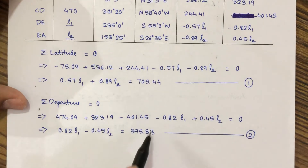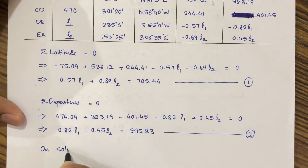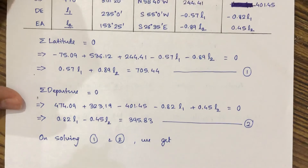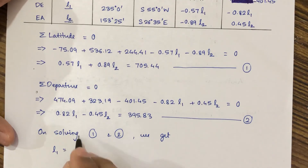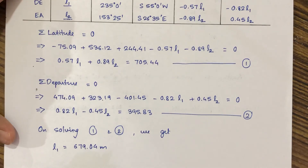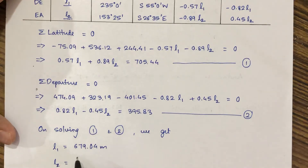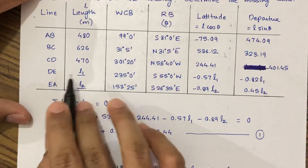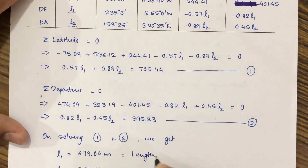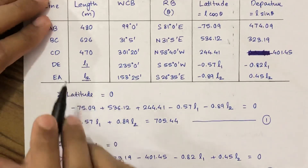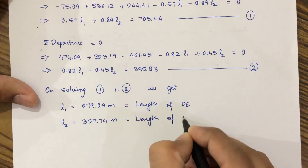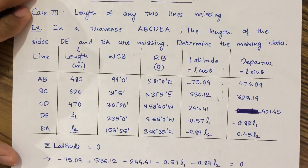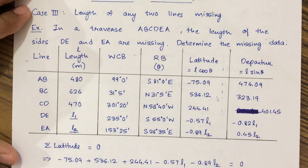We now have two simultaneous equations. On solving equations 1 and 2, which we can do directly on the calculator, we get L1 = 679.04 meters. L1 is the length of line DE and L2 is the length of line EA. This is what we had to find out. Case 3 is the simplest case from all 4 cases — that is, the length of any two lines missing. Thank you.